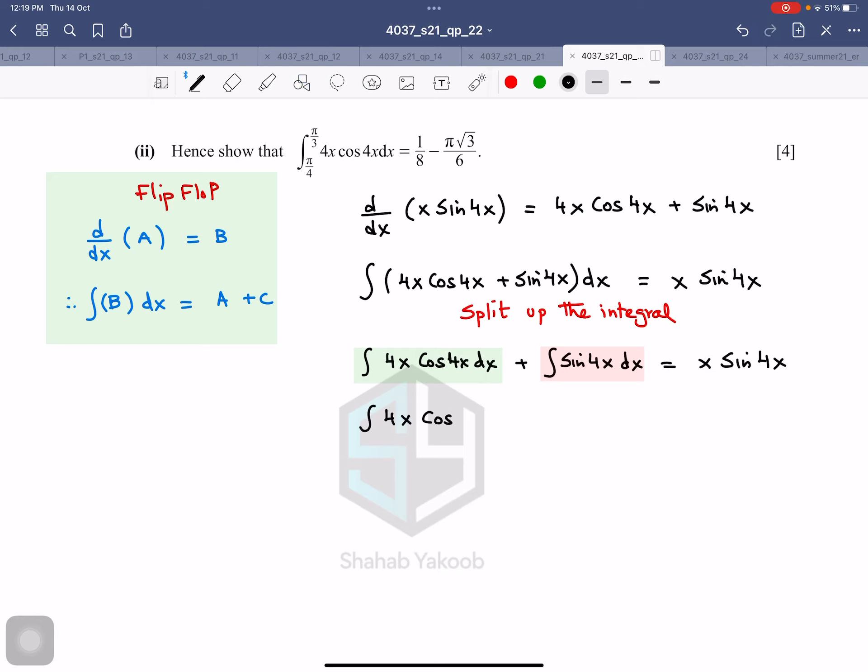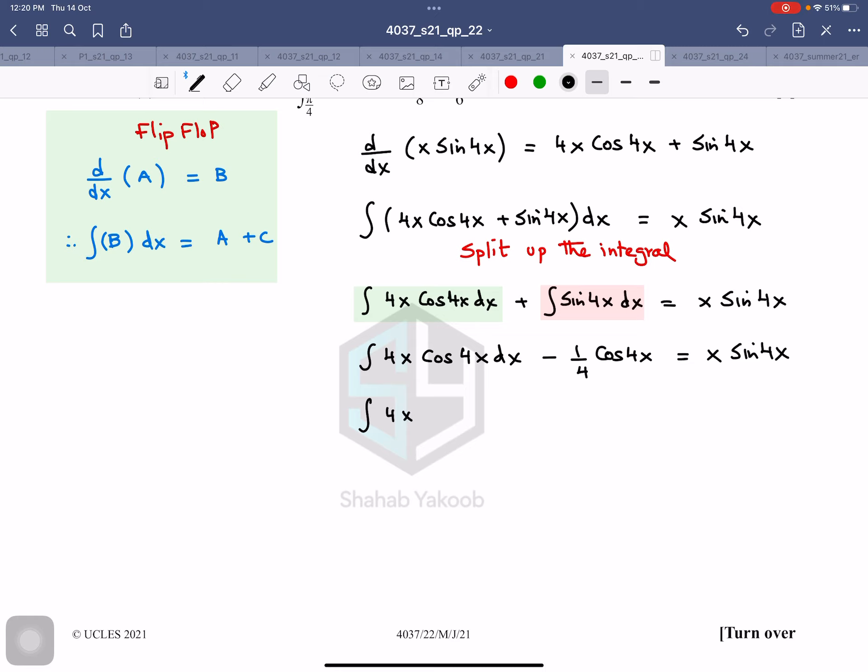I'll shift it to the other side. So therefore, integral 4x·cos(4x) dx, this is integral of sin(4x) is one-fourth cos(4x). And don't forget the negative sign. So let me erase this thing and put a negative sign over here. And this equals x·sin(4x). This is for 4 marks. This is 4x·cos(4x) dx equals x·sin(4x) plus one-fourth cos(4x).